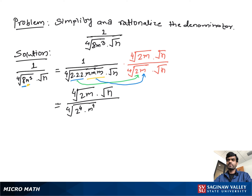Then we get the fourth root of 2m times the square root of n, over 2m times n.